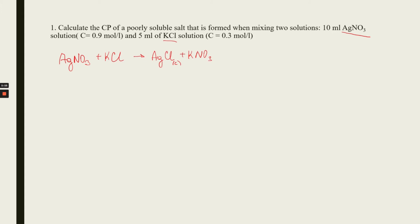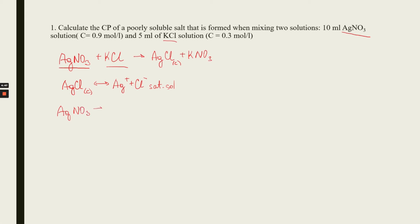Potassium nitrate is a soluble substance, and potassium chloride and silver nitrate are also soluble, but silver chloride is a low-soluble compound, so we write a small C here. Now let's write the heterogeneous equilibrium for silver chloride: two arrows, small C, and it is a saturated solution. We had two soluble electrolytes that exist in solution in the form of ions.